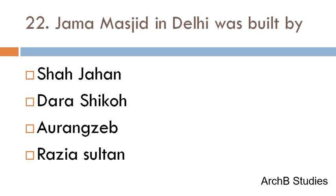Jama Masjid in Delhi was built by — Shah Jahan, Dara Shikoh, Aurangzeb, or Jai Sultan? The correct answer is Shah Jahan.